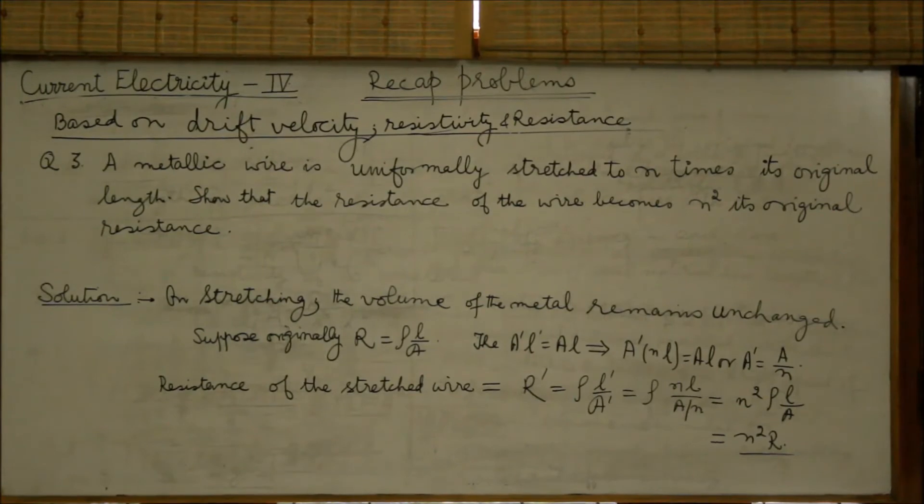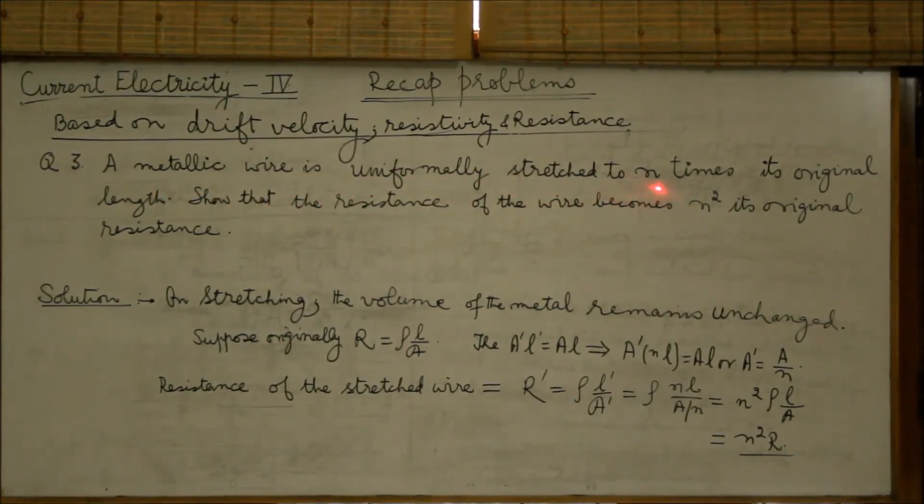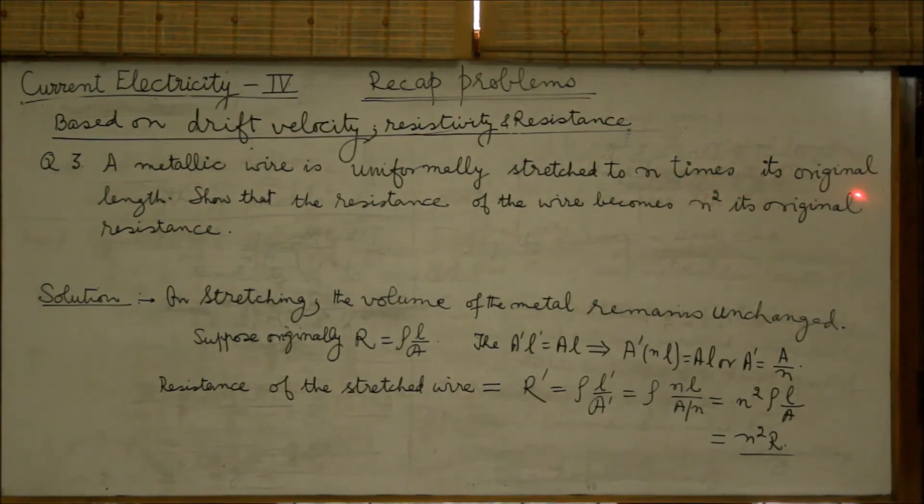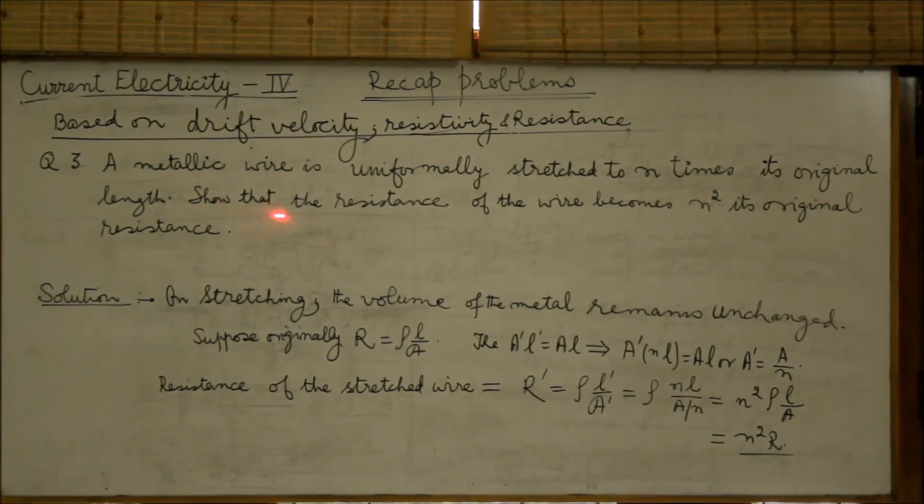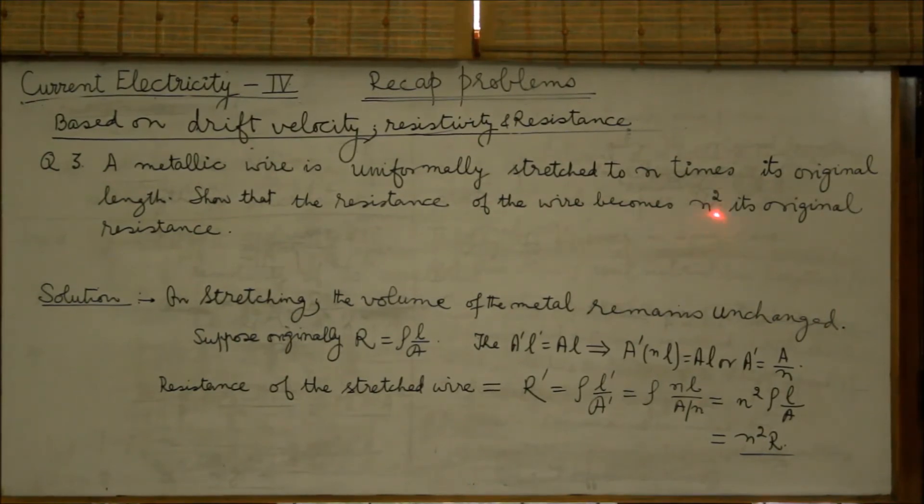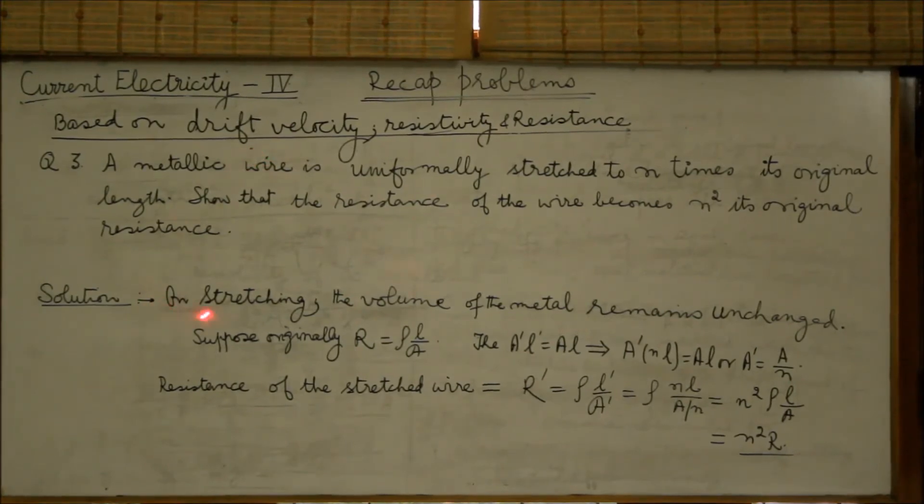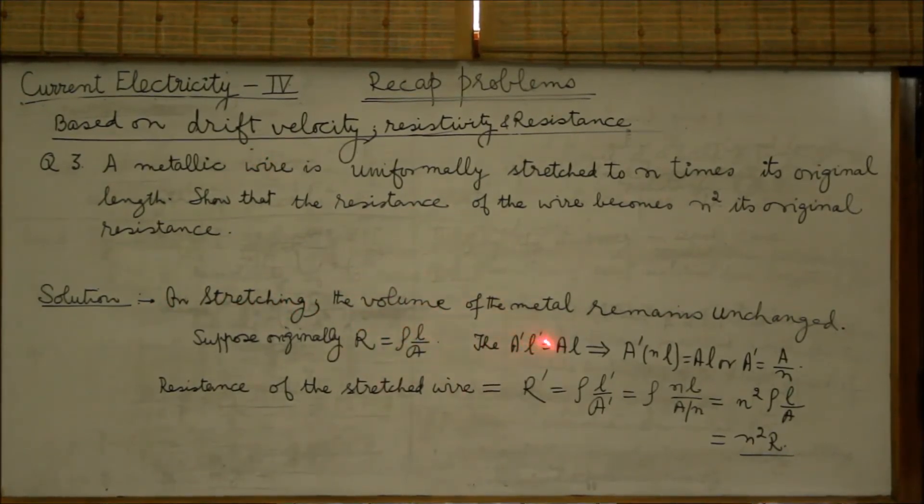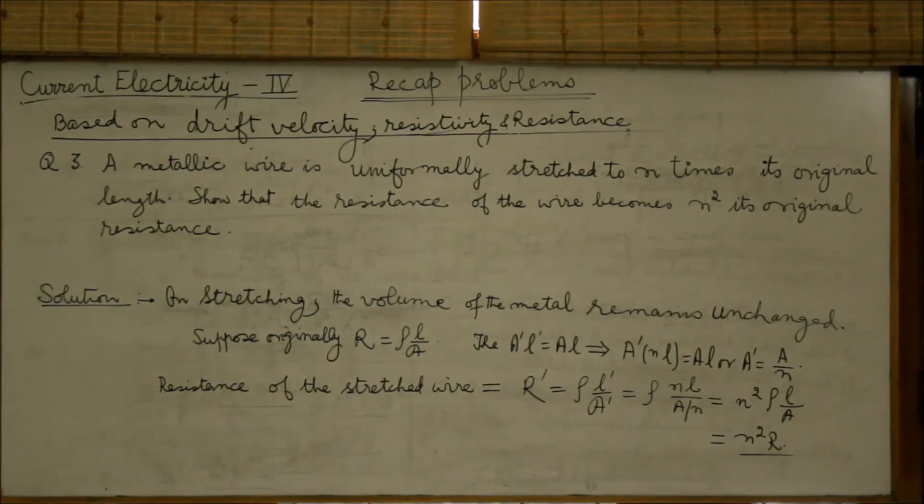Question number 3. A metallic wire is uniformly stretched to N times its original length. Show that the resistance of the wire becomes N square its original resistance. As a wire is stretched, the volume of the metal remains unaffected.